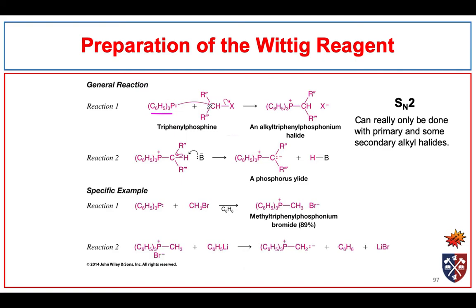When we get these reactions, we eliminate a halide and we get a triphenylphosphonium cation. Then we need to take a proton off of the carbon we just installed — we need a strong base to do that. Typically we'll use something like phenyl lithium, sodium hydride, or sodium amide. All of these may be strong enough to pull off that proton to form our phosphorus ylid. Here we see a specific example of triphenylphosphine reacting with methyl bromide to form methyl triphenylphosphonium ion. Then we react phenyl lithium as our base to pull off one of the protons from the carbon next to the positively charged phosphorus to get our Wittig reagent, our phosphorus ylid.